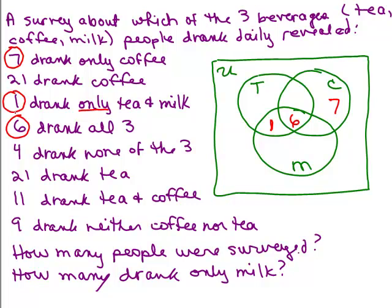Four drank none of the three. All right, what does that mean if you're not in any of these sets? It means you're out here someplace, right? So there are four people that didn't drink any of those beverages on a daily basis. So I used that clue.